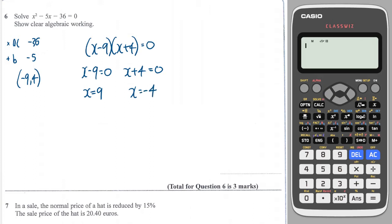And we can check this on our calculator by going to menu, equation, polynomial, degree 2, and that is 1x squared minus 5x minus 36. Press equals, and we get 9, and we get minus 4. Perfect.